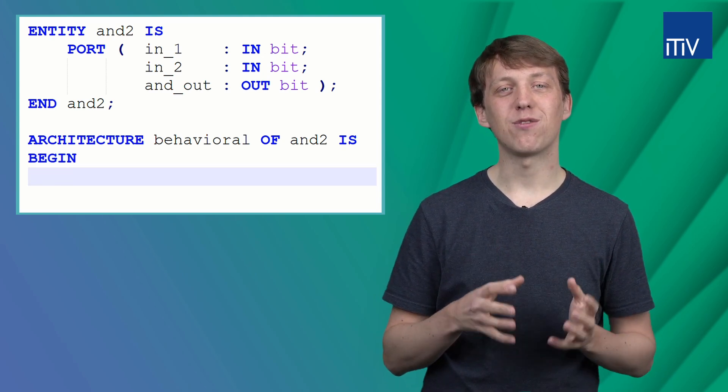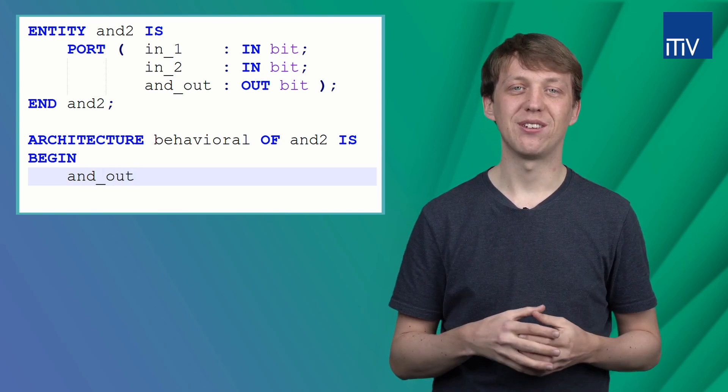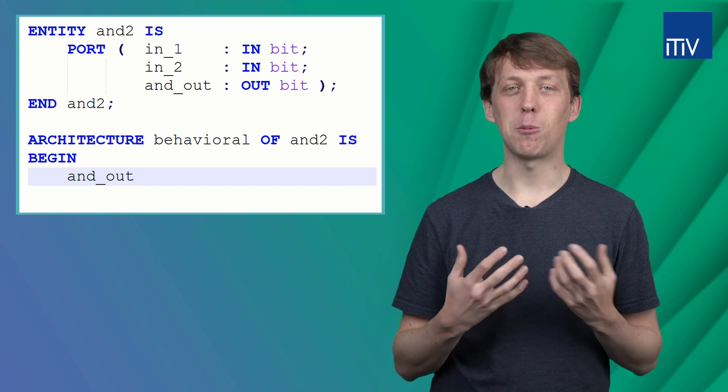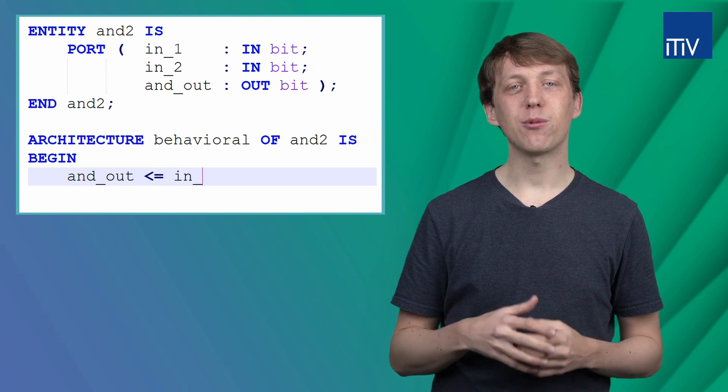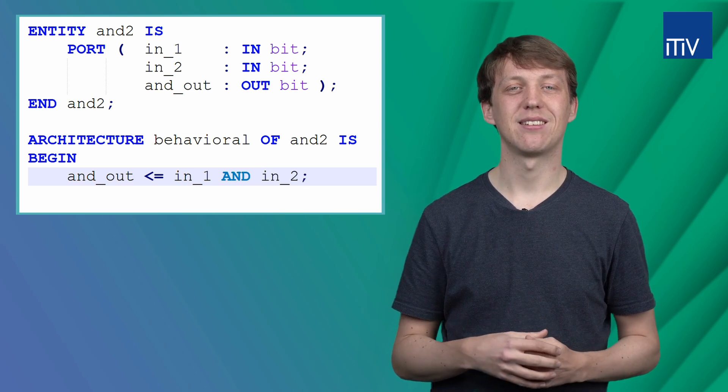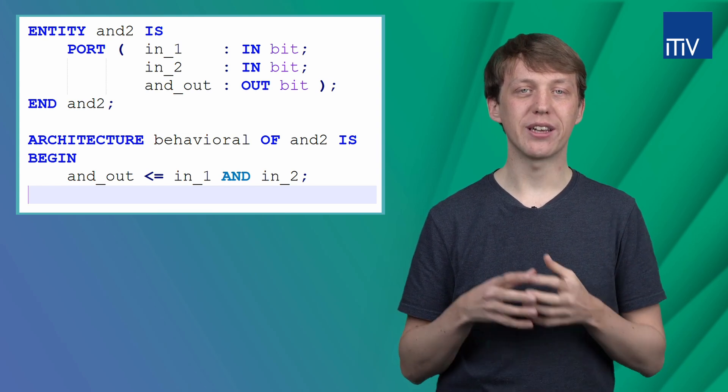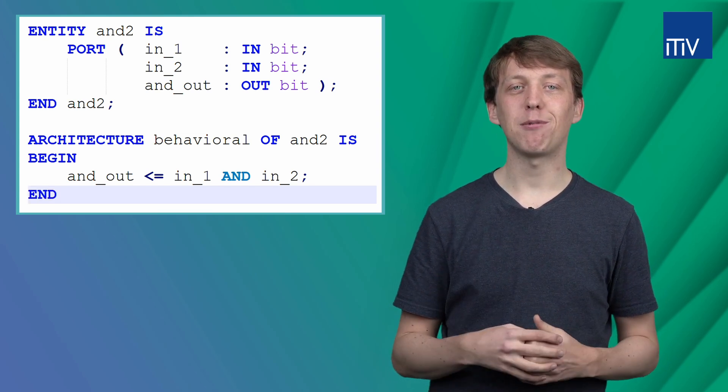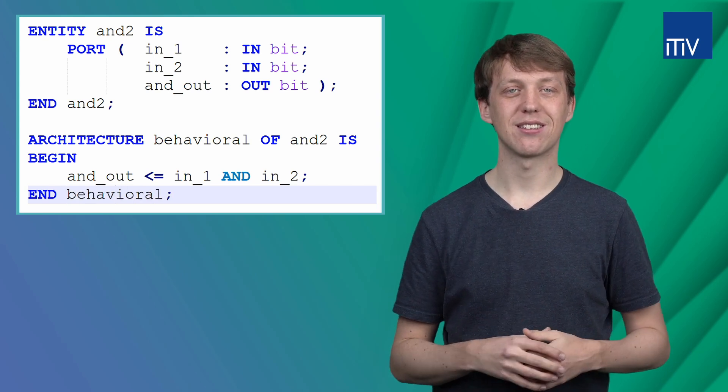Now we have to define how the output port and_out is set to a value. This is done by the assignment operator, which is defined by this arrow. Then we use the logical AND operation to implement the AND gate. Finally, we close the architecture description by using the keyword END and the name of our architecture as well as a semicolon. That's it. Now we have designed an AND gate which could be implemented on a chip.